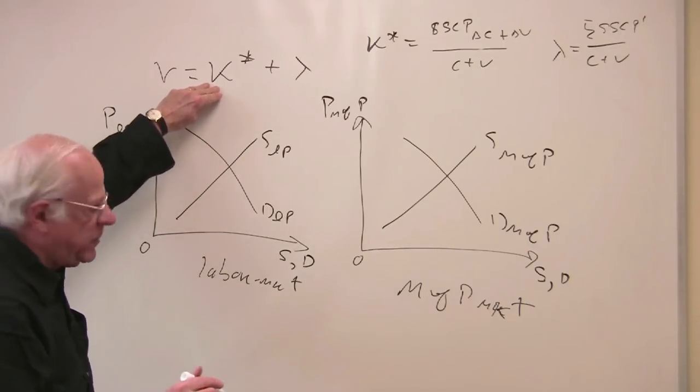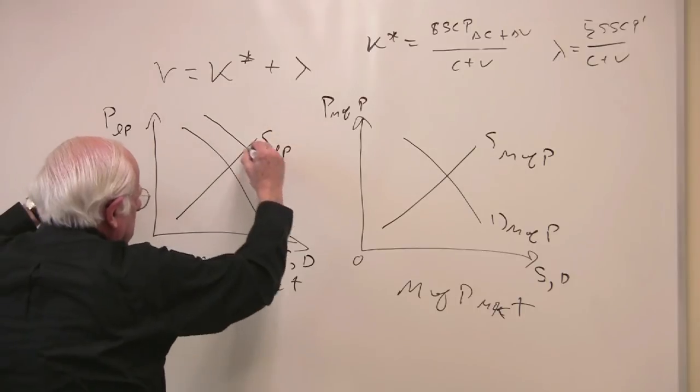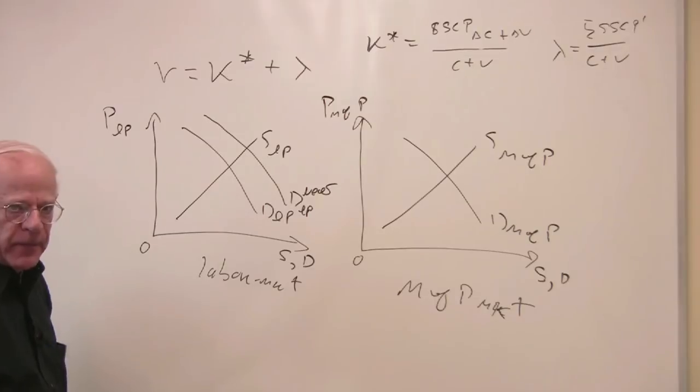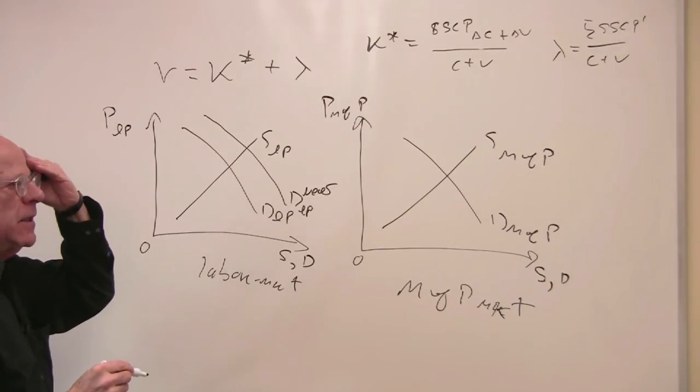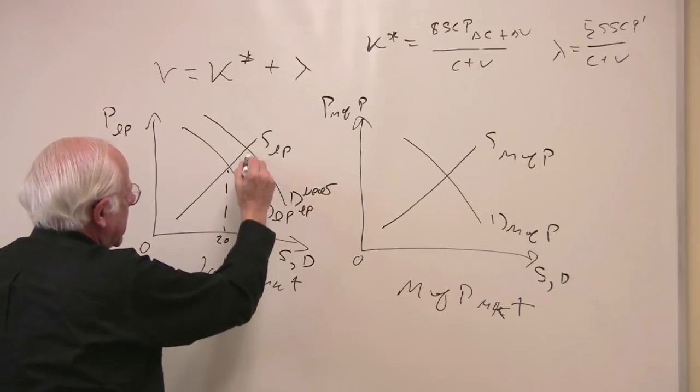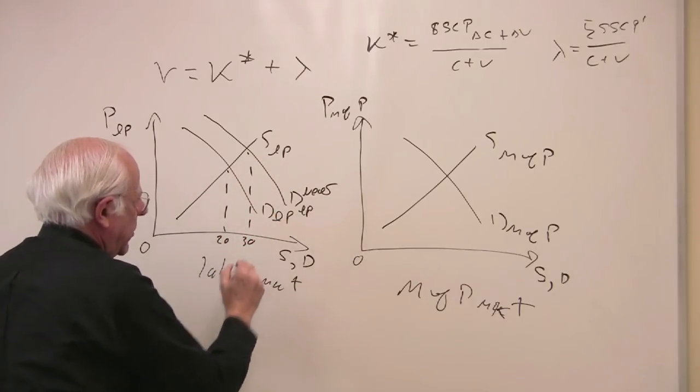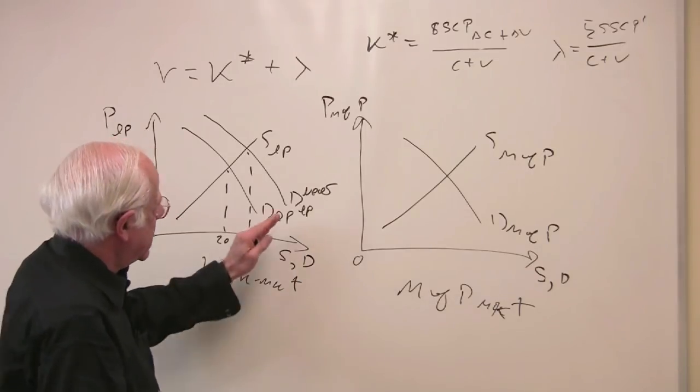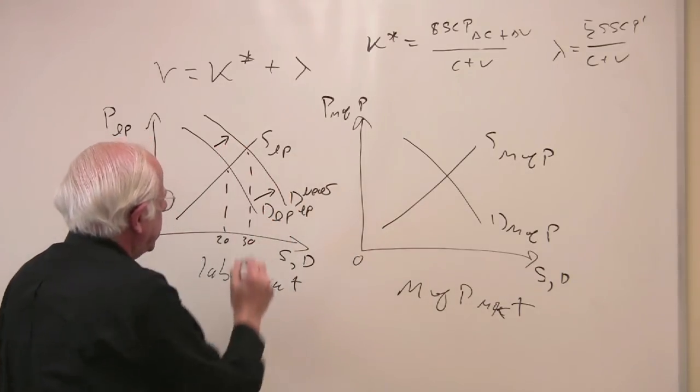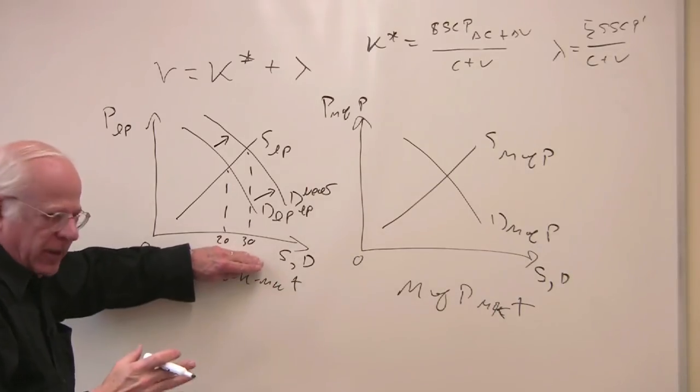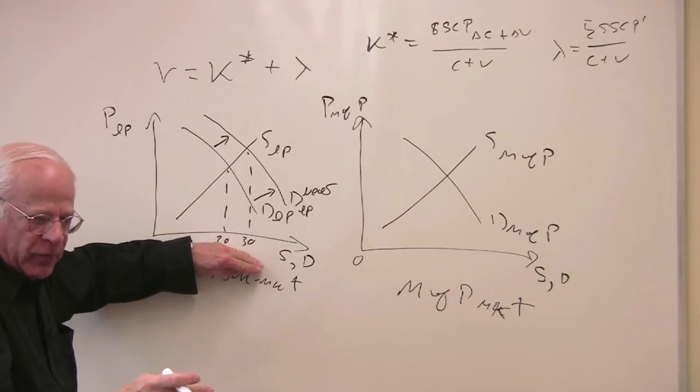So the supply and demand for these two inputs into capitalist production. Marx spends some time in volume three examining supplies and demands of a variety of different markets. He's well aware of the supply demand analysis that we have on the whiteboard. We have K star expanding. That means the demand for labor power shifts to the right. In the example that I gave you, this was 20 workers, this was 30 workers. So employment has expanded. Another way of doing that geometrically is the demand for labor power shifts to the right.